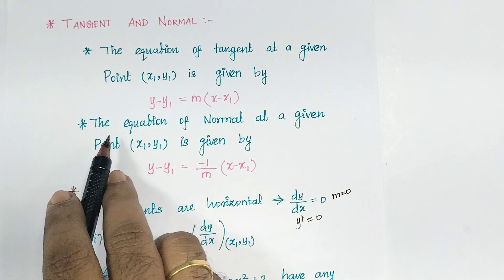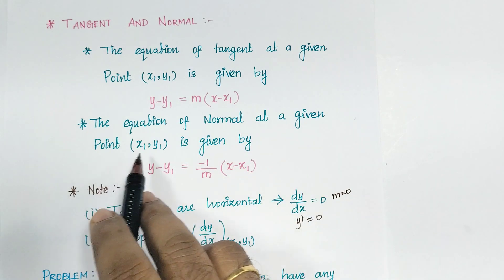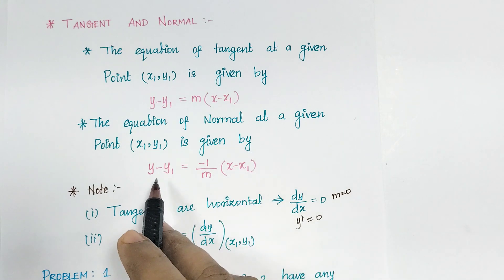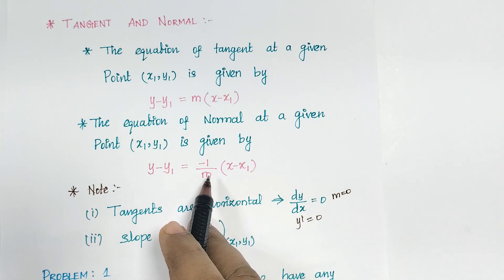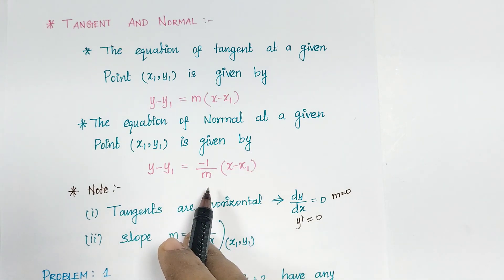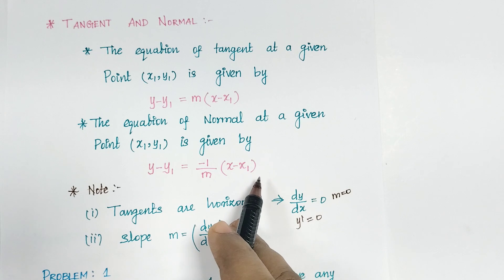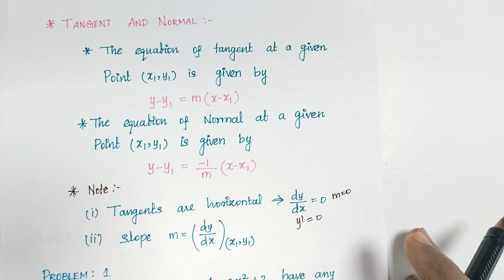The equation of normal at a given point x1, y1 is given by y minus y1 equal to minus 1 divided by m of x minus x1. Based on this, we can solve two problems.